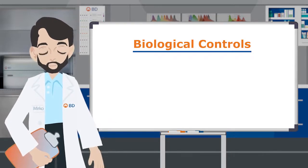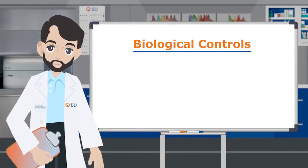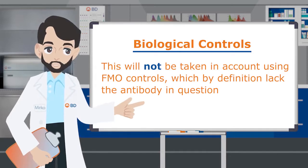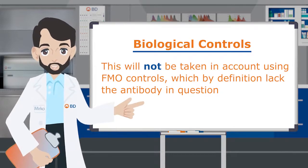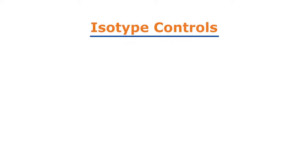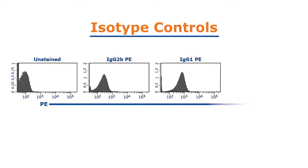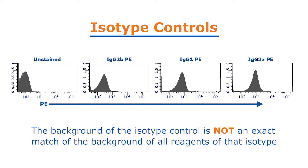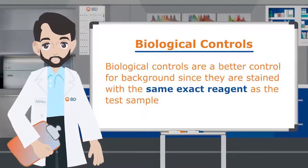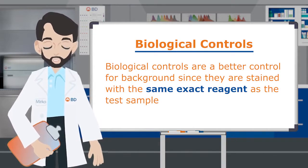Biological controls. There is also background introduced by the antibody of interest, adding noise in the form of non-specific binding. This will not be taken into account using FMO controls, which by definition lack the antibody in question. Isotype controls can be used to mimic the non-specific binding of antibodies of a specific isotype. However, the background of the isotype control is not an exact match of the background of all reagents of that isotype. For this reason, biological controls are a better control for background since they are stained with the same exact reagent as the test sample.